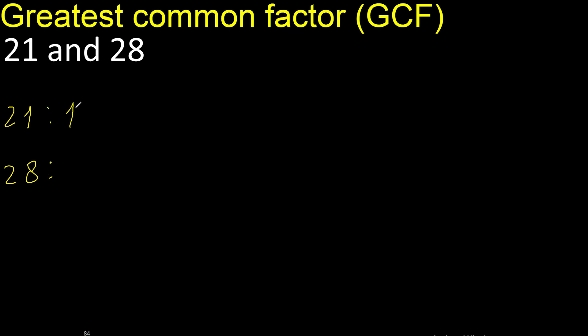Factors always start with 1. 21 divided by 1 is 21. Next, cannot be divided by 2. Next, divided by 3 is 7, here.